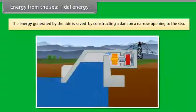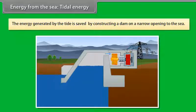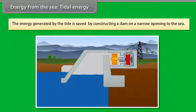The energy generated by the tide is saved by constructing a dam on a narrow opening to the sea. A turbine is then fixed at the opening of the dam system that converts this tidal energy to electricity.